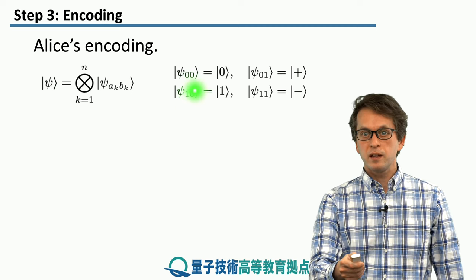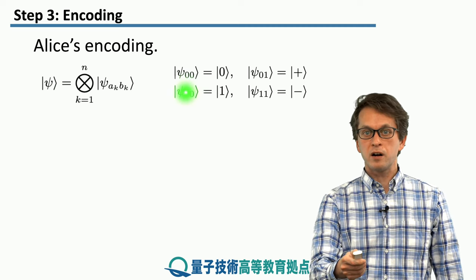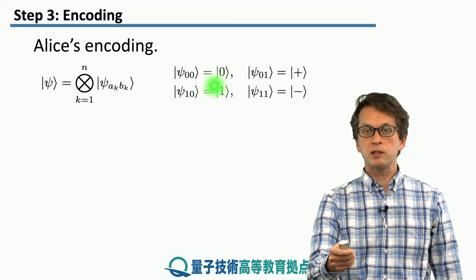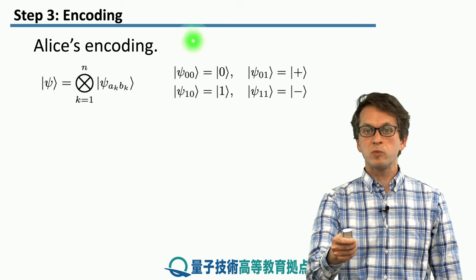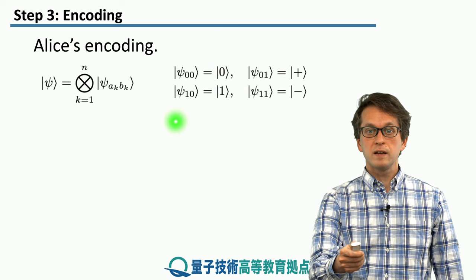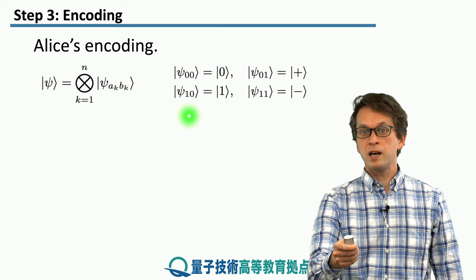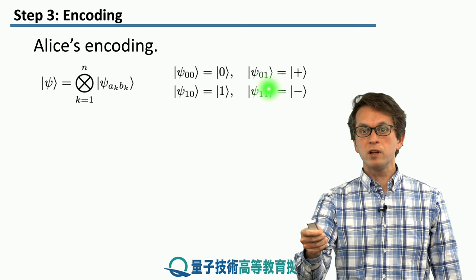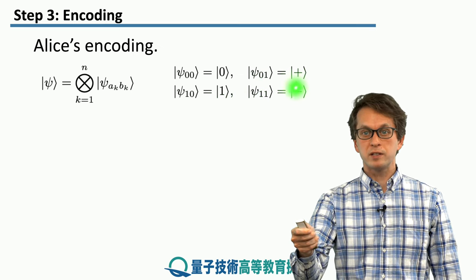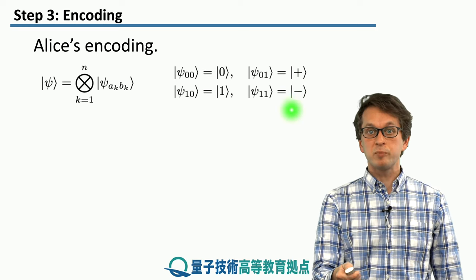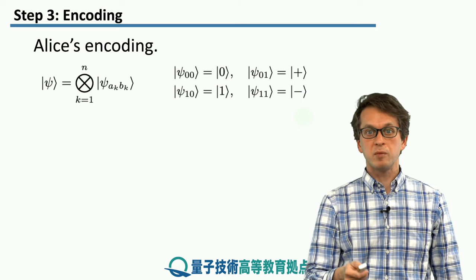If her bits AK and BK are 0,0, she prepares the state |0⟩. If AK and BK are 1,0, she prepares state |1⟩. Similarly, if they are 0,1 she prepares state |+⟩, and if they are 1,1 she prepares the state |−⟩.